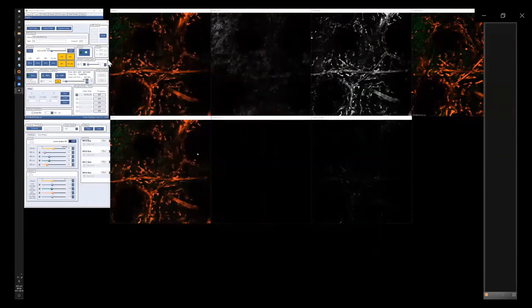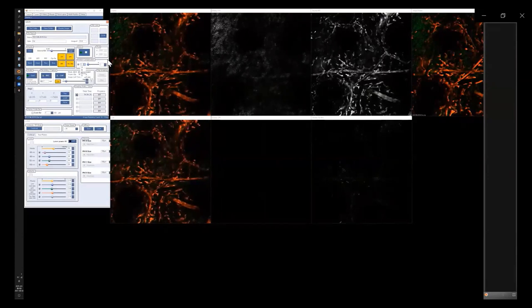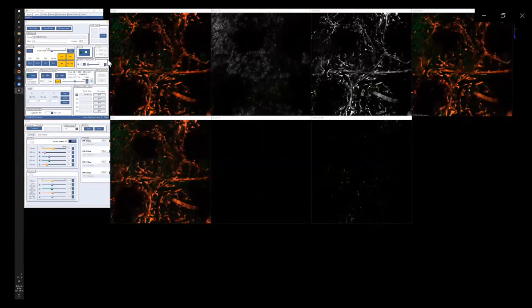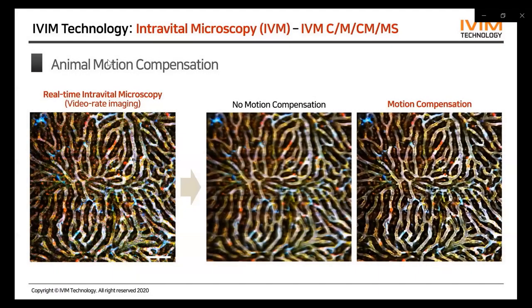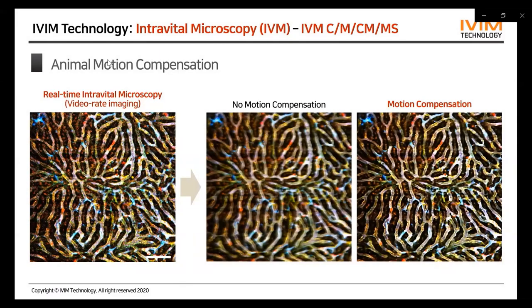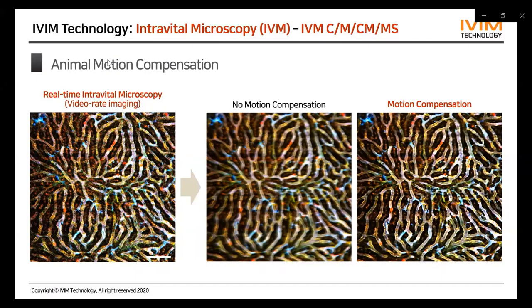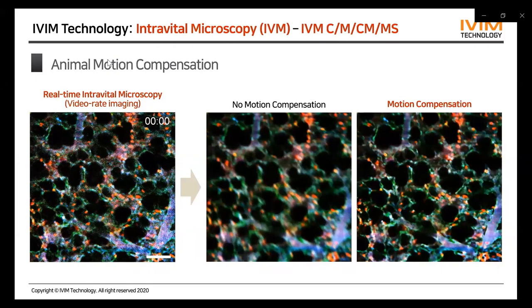For acquiring clear data from a moving animal, by checking the motion compensation function and selecting the channel for the registration reference — which normally includes some non-moving object — after capturing we can get the compensated clear image on the right. This is the result with and without motion compensation: the image without compensation looks very shifted with motion, but after compensation we get very fine and clear images.